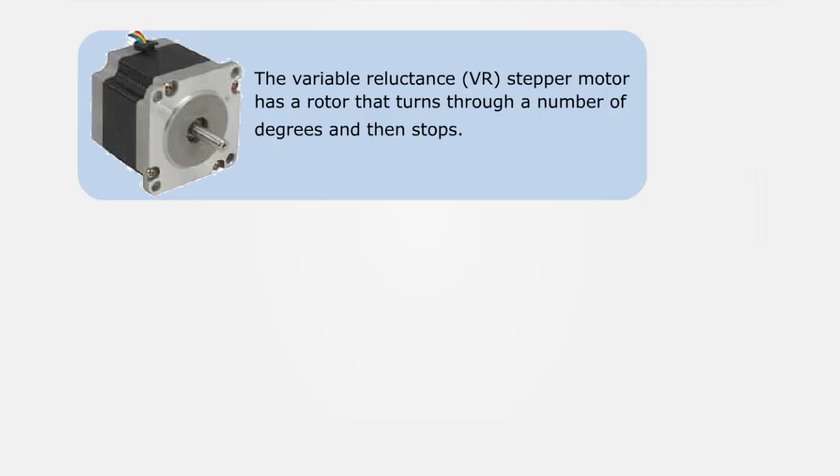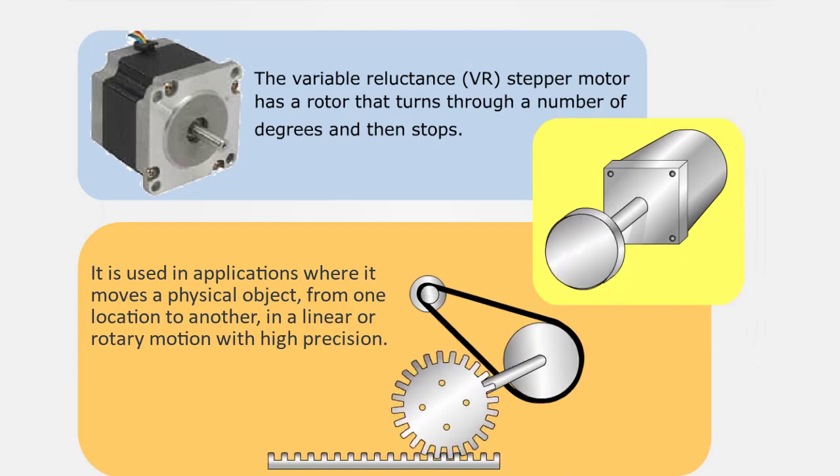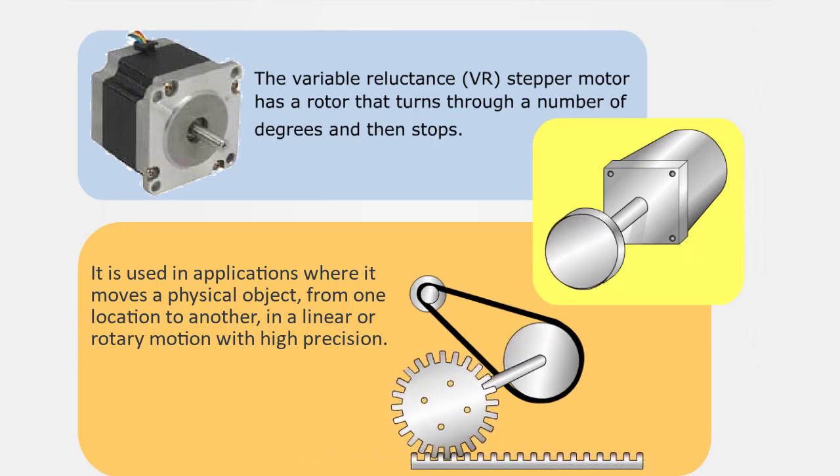Welcome to the Variable Reluctance Stepper Motor. The Variable Reluctance Stepper Motor has a rotor that turns through a number of degrees and then stops. It is used in applications where it moves a physical object from one location to another in a linear or rotary motion with high precision.